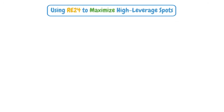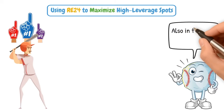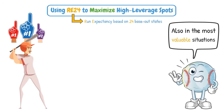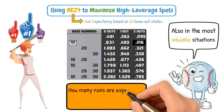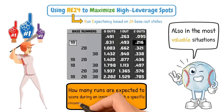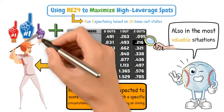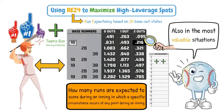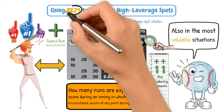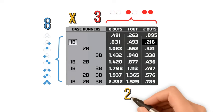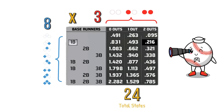Starting with RE24: you want your best hitters up more often, but also in the most valuable situations. RE24 — Run Expectancy Based on 24 Base-Out States — is a chart that shows us how many runs are expected to score during an inning given a specific circumstance at any point during that inning. By using the values in the RE24 matrix, you can compare how frequently a batter successfully adds to a team's run-scoring potential, and see which lineup positions come up most frequently with those higher run-producing moments. It's called RE24 because the combination of outs and base-runner states creates a 3-by-8 matrix, or 24 total states.